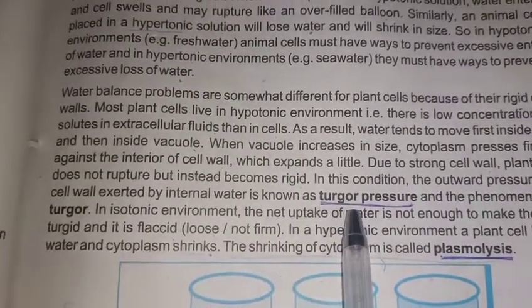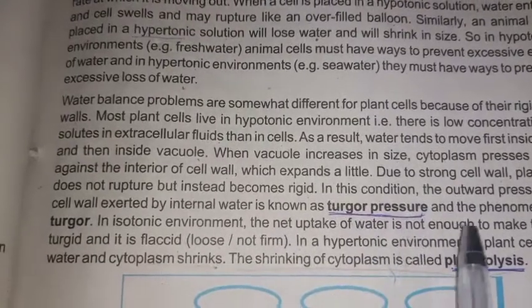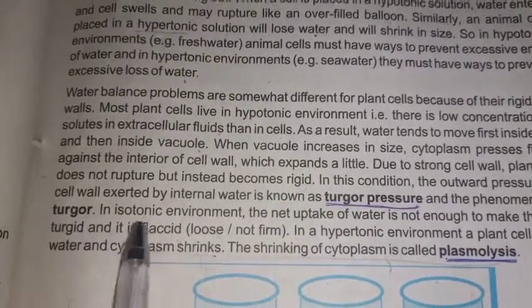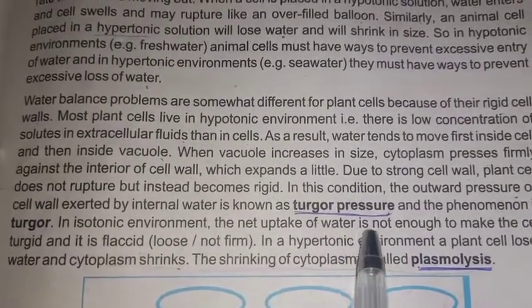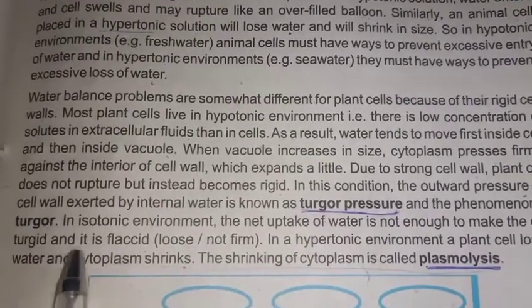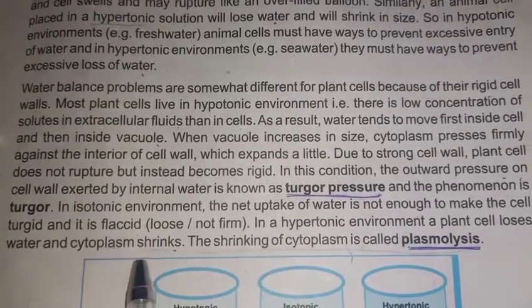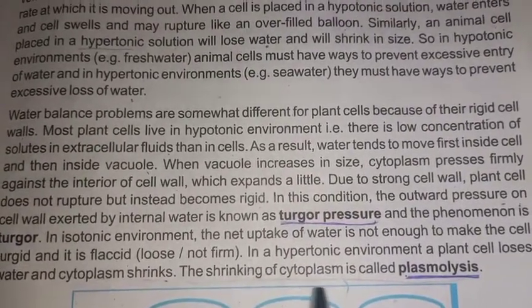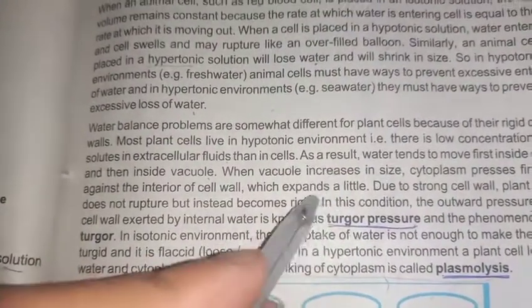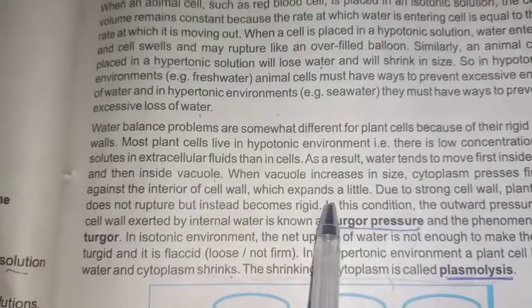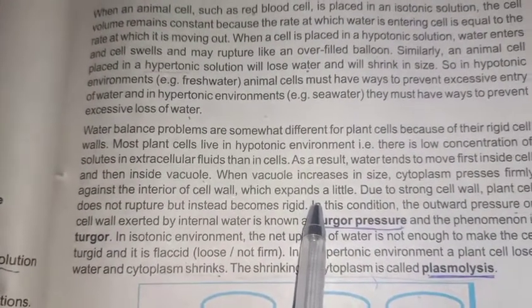In an isotonic environment, the net uptake of water is not enough to make the cell turgid and it is flaccid. In a hypertonic environment, the plant cell loses water and the cytoplasm shrinks. This shrinking of the cytoplasm is called plasmolysis.